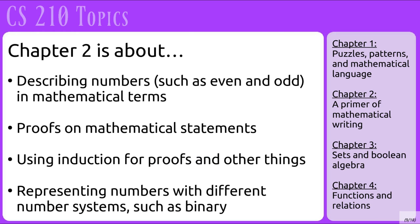Chapter 2 is about describing numbers, such as whether they're even or odd, or divisible by some other number, and we're describing them in mathematical terms. We also do a lot of proofs in this chapter, and we use induction to prove things or derive other types of things. We also work with representing numbers with different number systems, such as binary and hexadecimal.